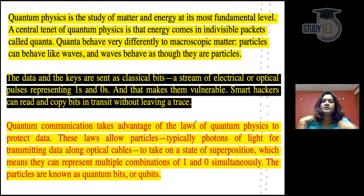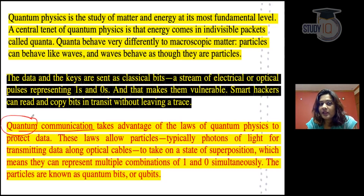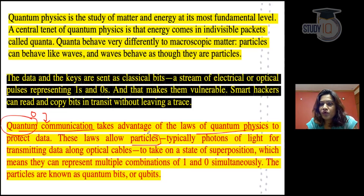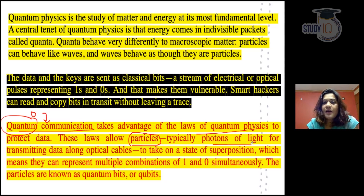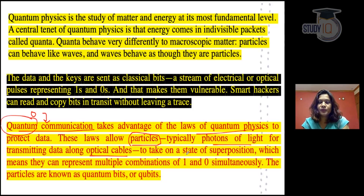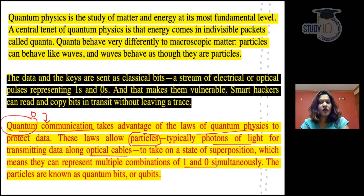For very secure data we don't want to send through vulnerable systems, we use quantum communication. The laws of quantum physics are used to protect data. Using a photon of light, the result of a wave is transmitted through optical cable where it will take a state of superposition - multiple combinations of 0 and 1 simultaneously. These are very fragile multiple combinations, which we call quantum bits or qubits.